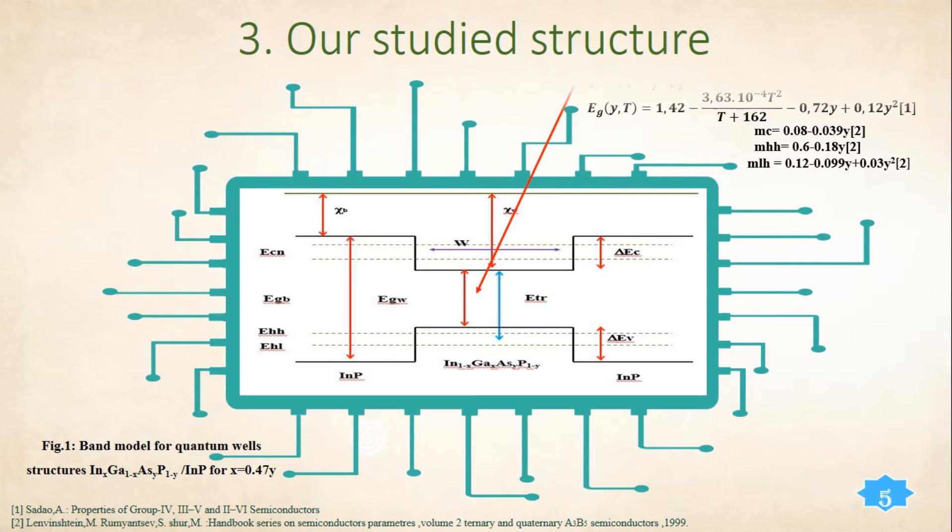Our study structure is a quantum well based on InGaAsP as quantum and InP as a barrier. A schematic energy band diagram representing the quantized levels is depicted in figure 1. The discontinuity delta EC and delta EV of the edges of the conduction and valence band at the heterostructure junction. ECn and EVn are the quantized energy levels in the conduction and valence. ETR is the transition energy. This is the effective mass used in our model structure for the well and for the barrier.